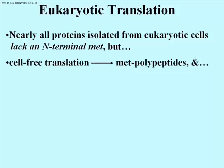In spite of that, if you create a cell-free protein synthesizing system in a test tube using eukaryotic components and eukaryotic messenger RNAs, the polypeptides that are produced do contain methionine at the N terminus. So clearly the polypeptides synthesized in translation in cells begin with methionine, but then there is a post-translational processing step that removes the methionine, so that very few mature polypeptides produced by eukaryotic cells can be shown to have a methionine.